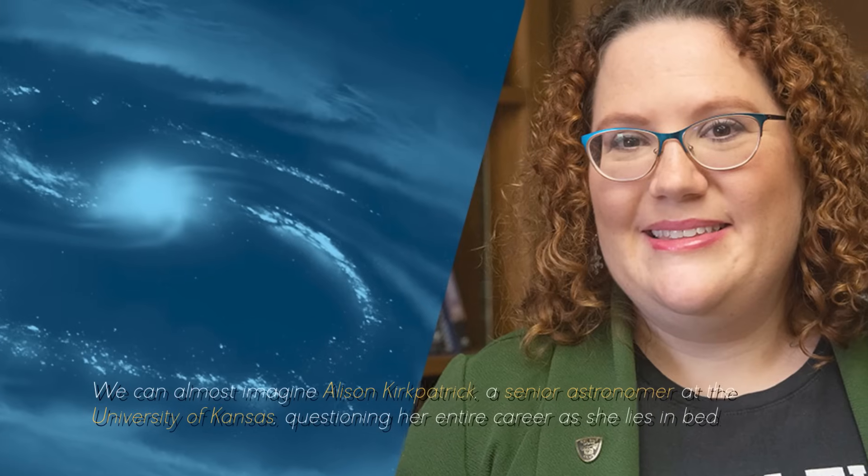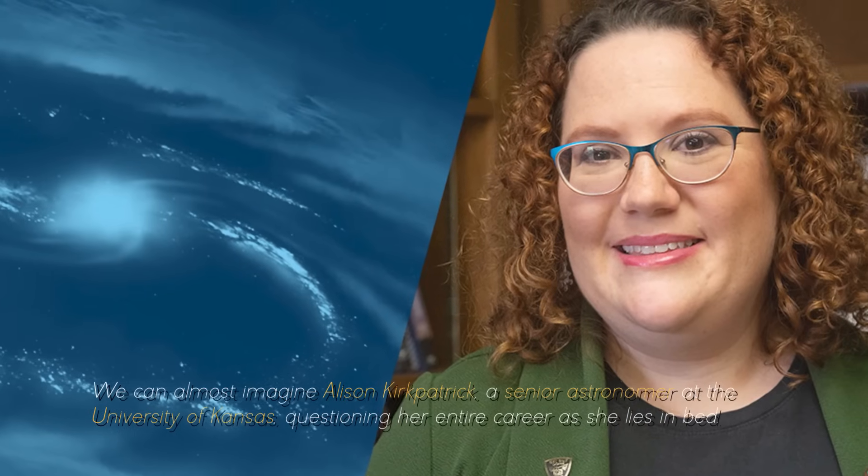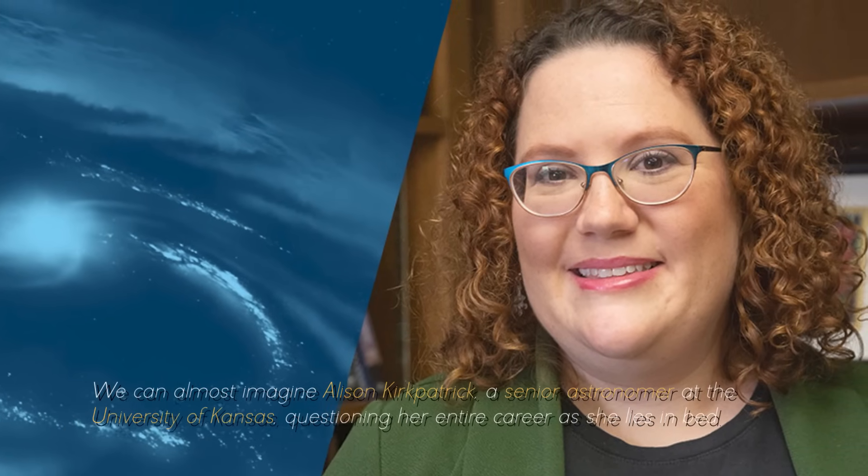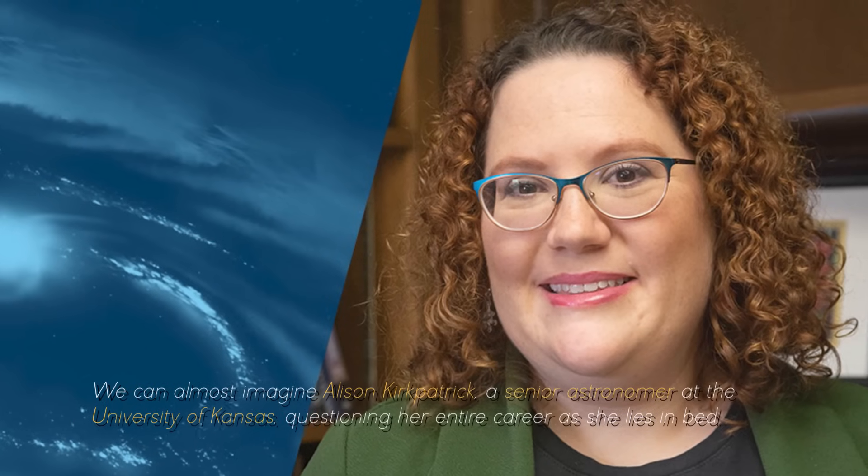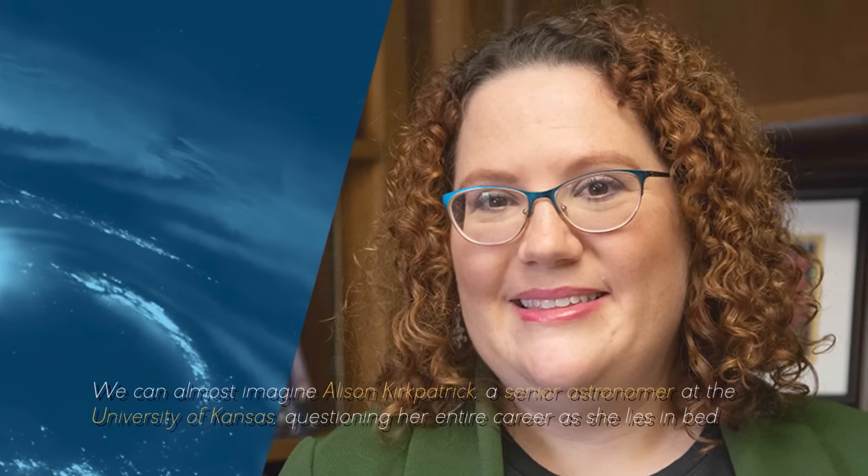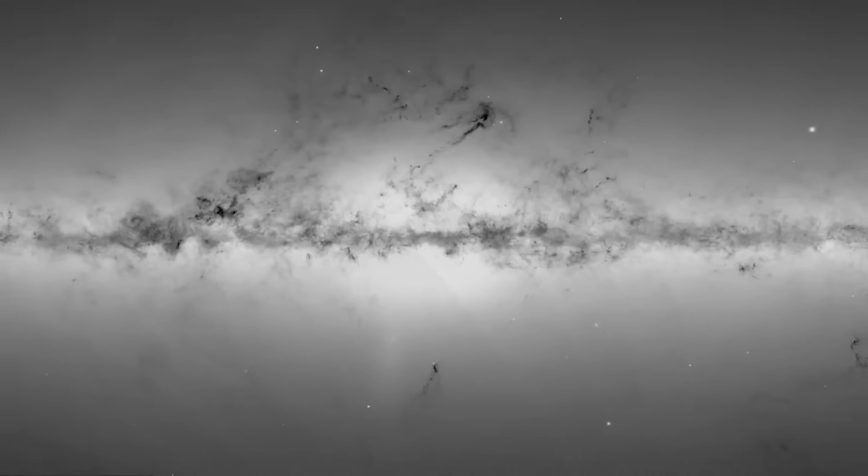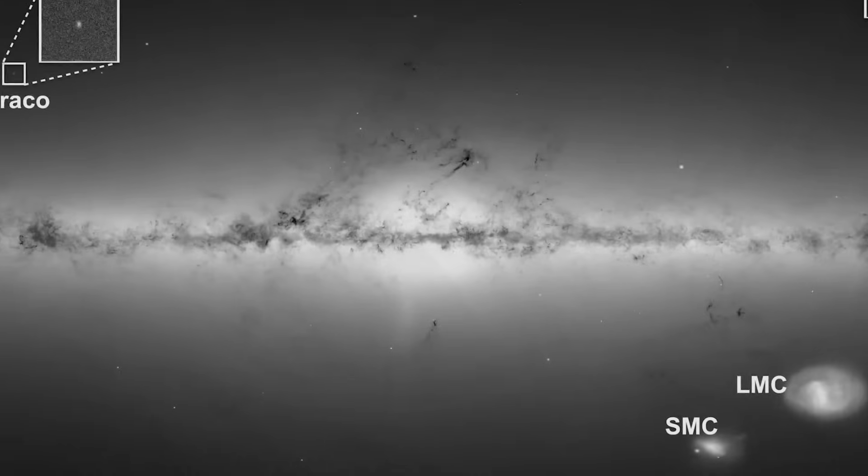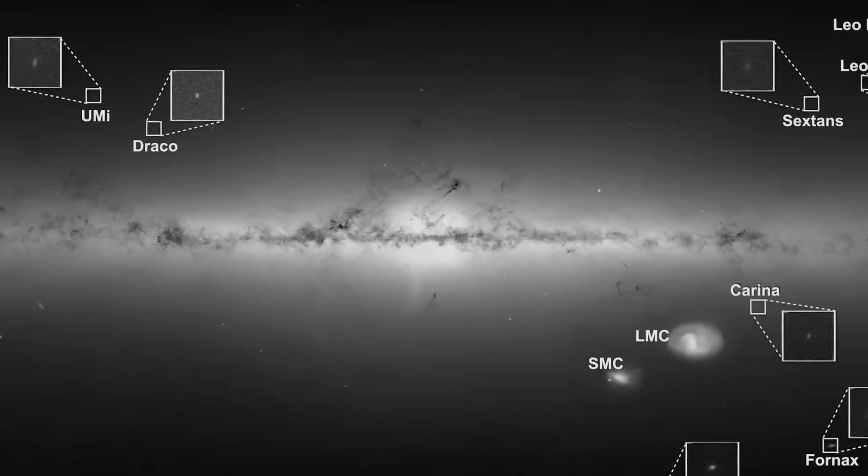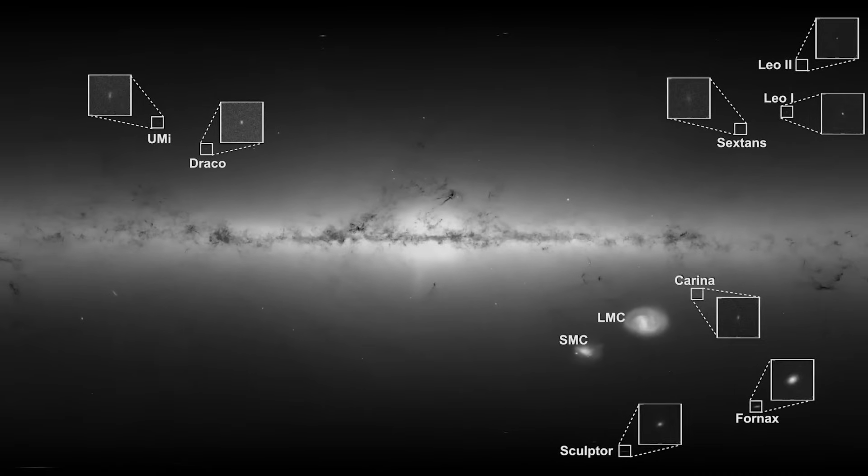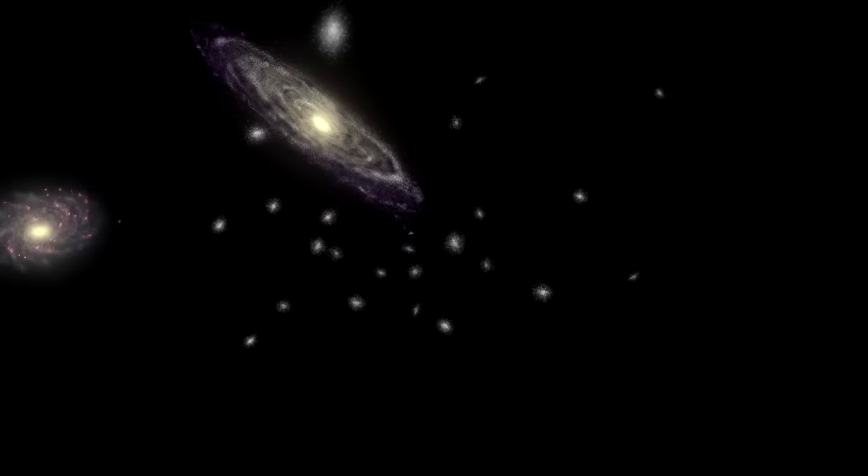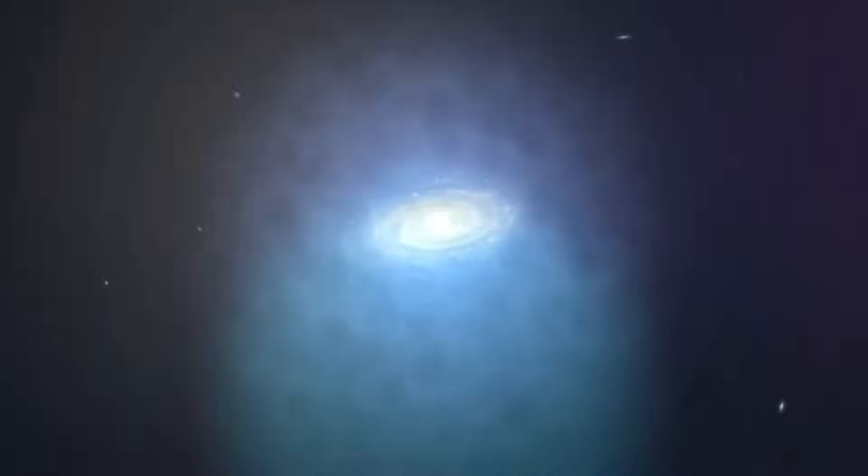We can almost imagine Alison Kirkpatrick, a senior astronomer at the University of Kansas, questioning her entire career as she lies in bed. Why so much surprise? The reason for this bewilderment lies in the fact that galaxies captured by the James Webb do not behave according to what the Big Bang hypothesis would predict. They are too small, excessively uniform, and appear to be on an edge incompatible with this theory. Moreover, their numbers are surprisingly high.